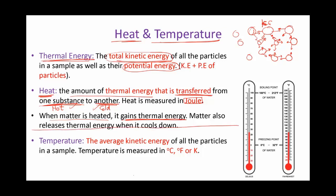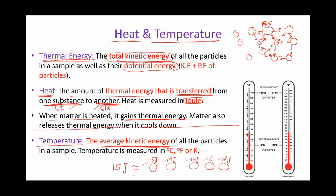What about temperature? Temperature is a scale that tells you how hot or how cold an object is. Temperature is actually the average kinetic energy of the particles — the average, not the total. For example, if you have five particles with kinetic energies of 13, 14, 15, 16, and 17 joules, the average kinetic energy is 13+14+15+16+17 divided by five, which gives you an average of 15 joules. This is the average kinetic energy.